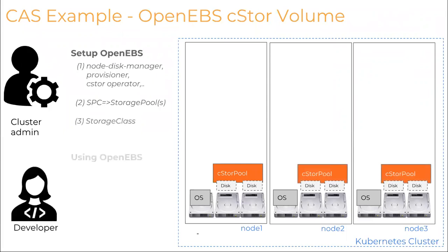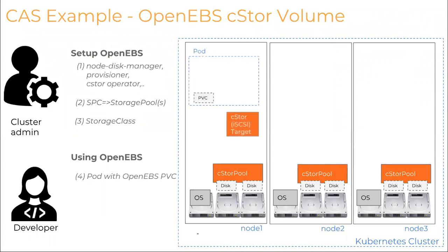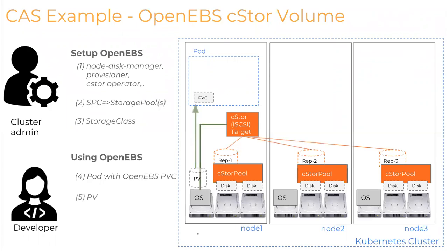Like any other storage provider, you create a storage class that provides volumes from these storage pools. Application developers can then launch a pod using a PVC associated with the OpenEBS storage class. As part of provisioning the PV, a new pod gets spawned for that particular volume — that's nothing but an iSCSI target. Logical LUNs are created as replicas on different storage pools, controlled by policies you set via the storage class in terms of how many replicas you want. C-Store target does synchronous replication to the different configured replicas.